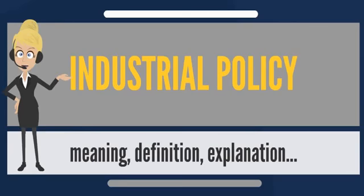The industrial policy of a country, sometimes denoted IP, is its official strategic effort to encourage the development and growth of part or all of the manufacturing sector as well as other sectors of the economy. The government takes measures aimed at improving the competitiveness and capabilities of domestic firms and promoting structural transformation. A country's infrastructure, transportation, telecommunications and energy industry is a major part of the manufacturing sector that often has a key role in IP.